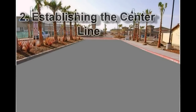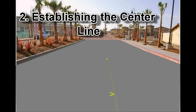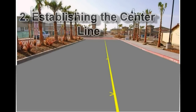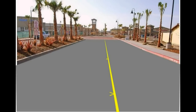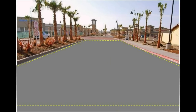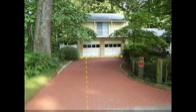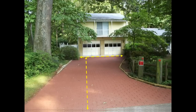We recommend starting the layout process by establishing the center of the project. Having a centerline on the project makes it easy to coordinate template sight lines and to ensure the project is aligned properly. When establishing the centerline, you have two options: if your project is symmetrical, you can measure the width of the project then divide in half to find the center; or, if the project isn't symmetrical, you can use one straight side of the project to create a perpendicular line which will serve as your centerline.